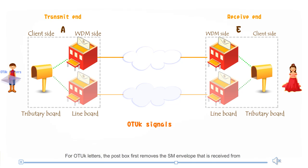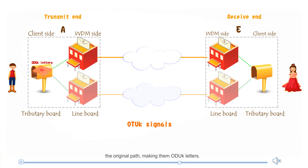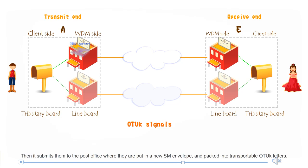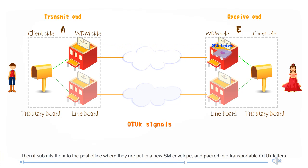For OTUK letters, the sender first removes the SM envelopes received from the original path, making them ODUK letters, then submits them to the post office where they are put in a new SM envelope and packed into transportable OTUK letters.